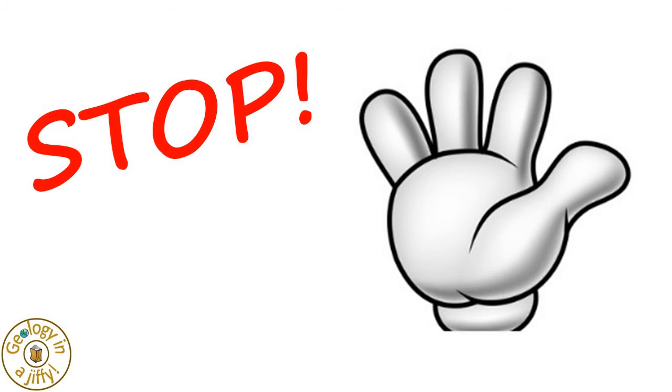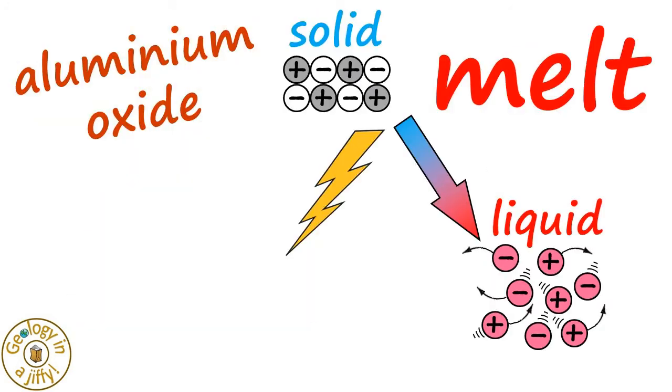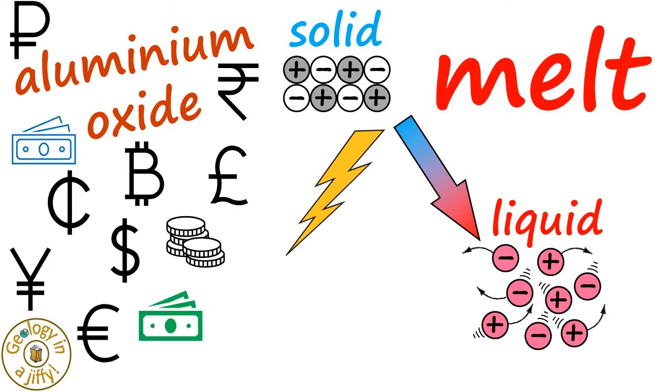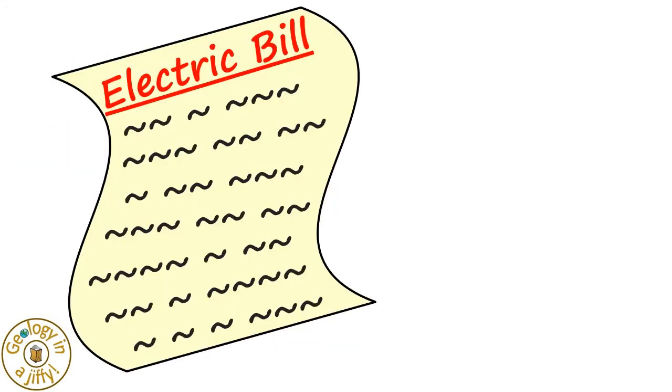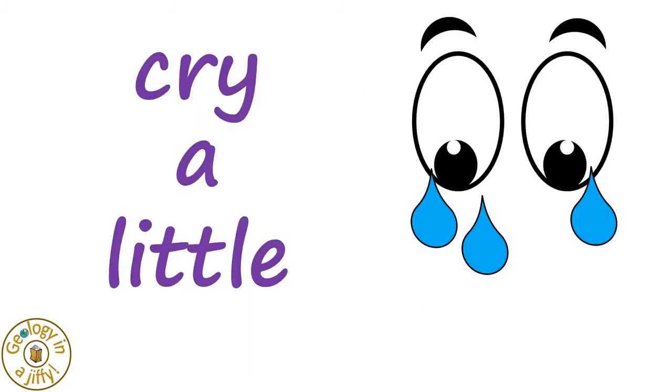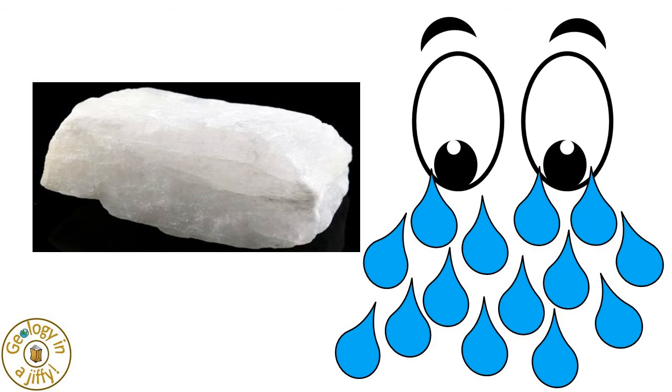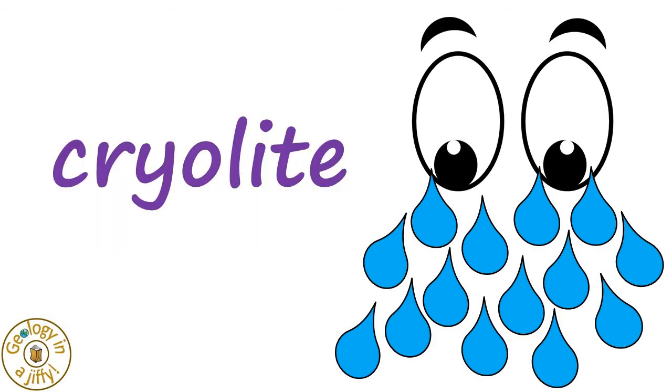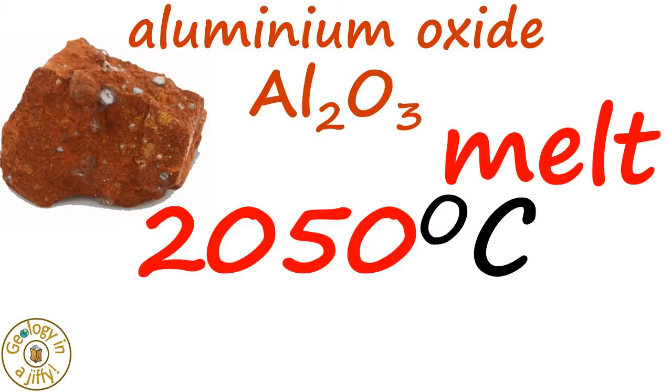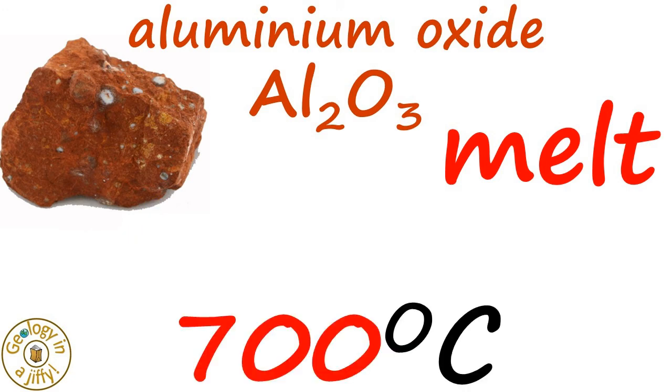But stop! The electric bill for this process must be very high because using electricity to melt aluminium oxide must be very expensive, which would make you cry a lot. This material called cryolite is added because melting aluminium oxide happens at over 2000 degrees Celsius, and when cryolite is added, this lowers the temperature to only 700 degrees Celsius.